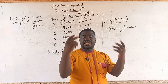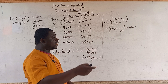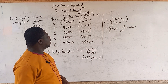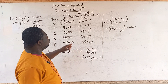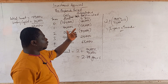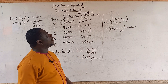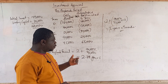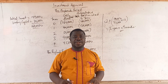In the discounted payback period, which will be covered in the next video, we will look at the time value of money and discount all these cash flows into today's terms before looking at the cumulative cash position to find the payback period.